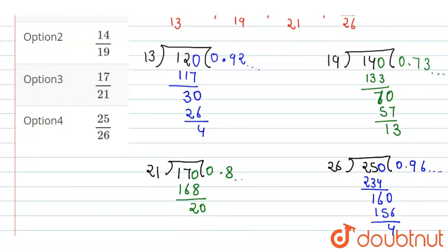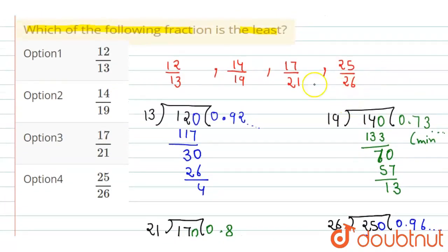Now we need to find the minimum value. The minimum value comes at 0.73. So the fraction with minimum value is 14 upon 19. Second option is correct.